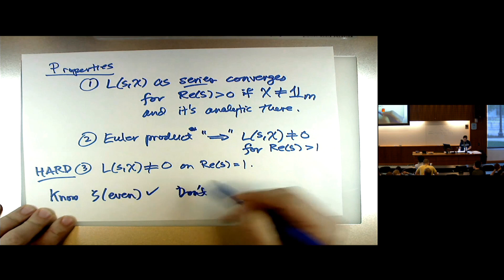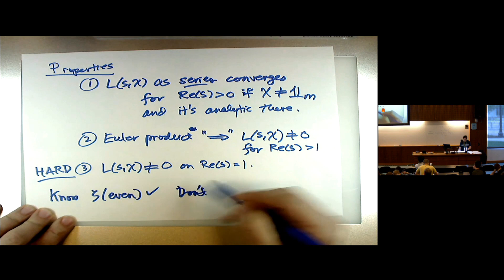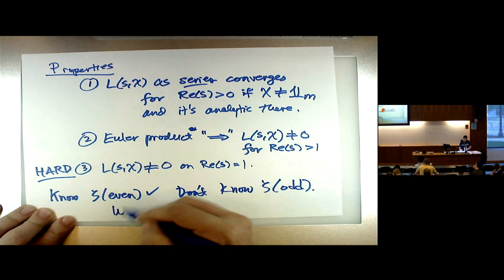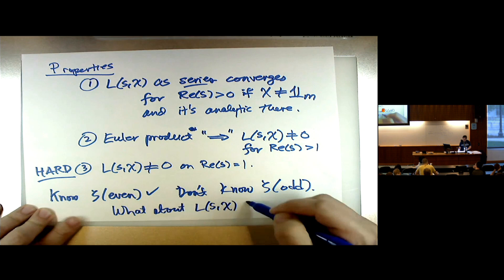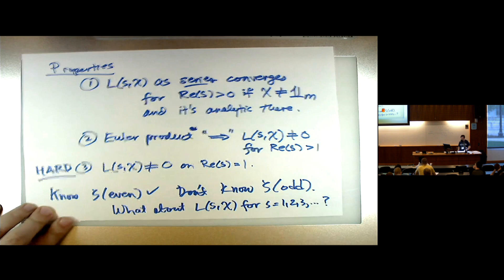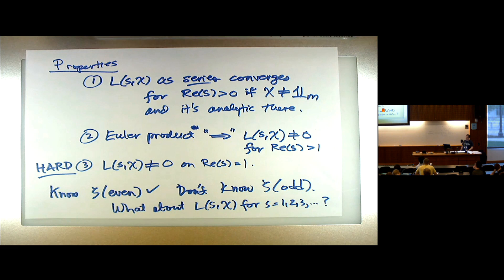We know zeta at even numbers and we don't know zeta at odd numbers. What about these L-functions — do we know their values at certain positive integers? Can we find formulas that generalize Euler's formula? The answer is yes, we know it for half of them: either we have a formula at the even numbers or at the odd numbers, and at the other half it's a complete mystery. Except at the number 1 there's always a formula.